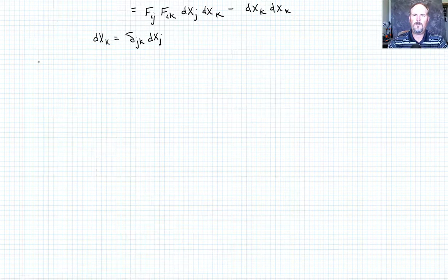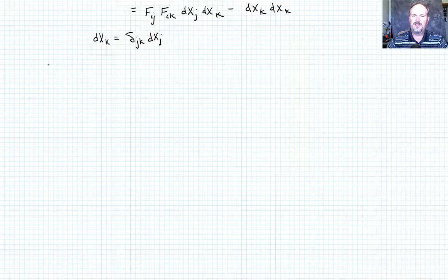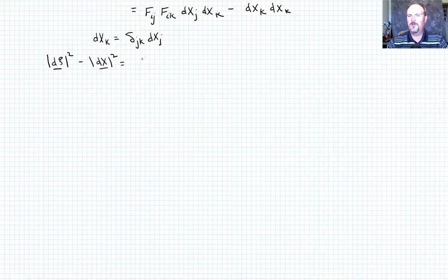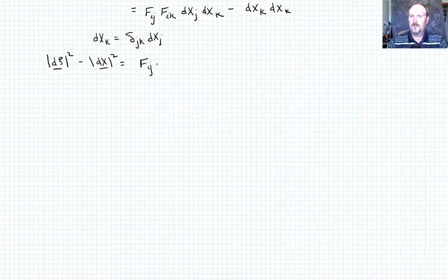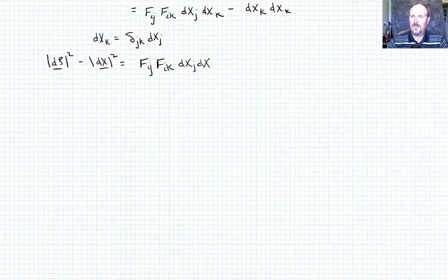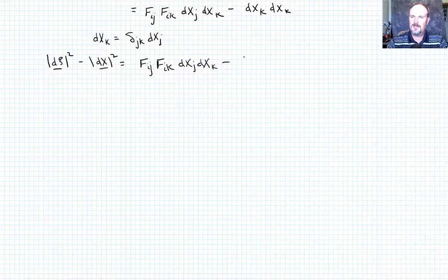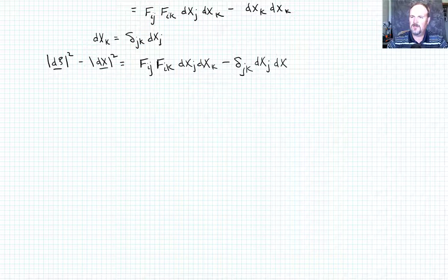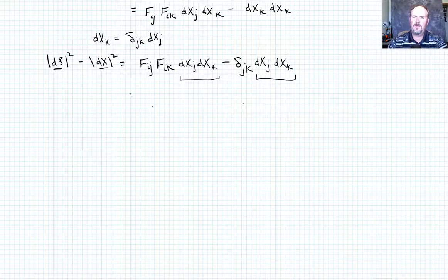So we could write DX_k is equal to δ_jk times DX_j, right? That's legal. Okay, and if I do that, I can go ahead and substitute now. So here, I'm going to write this down for you again: |dx|² minus |DX|² is going to be equal to F_ij F_ik DX_j DX_k minus, and I'm just going to use this once because I still want one of the DX_k's there, so minus δ_jk DX_j times DX_k. And now I have what I want. I have that quantity and that quantity, they're the same.